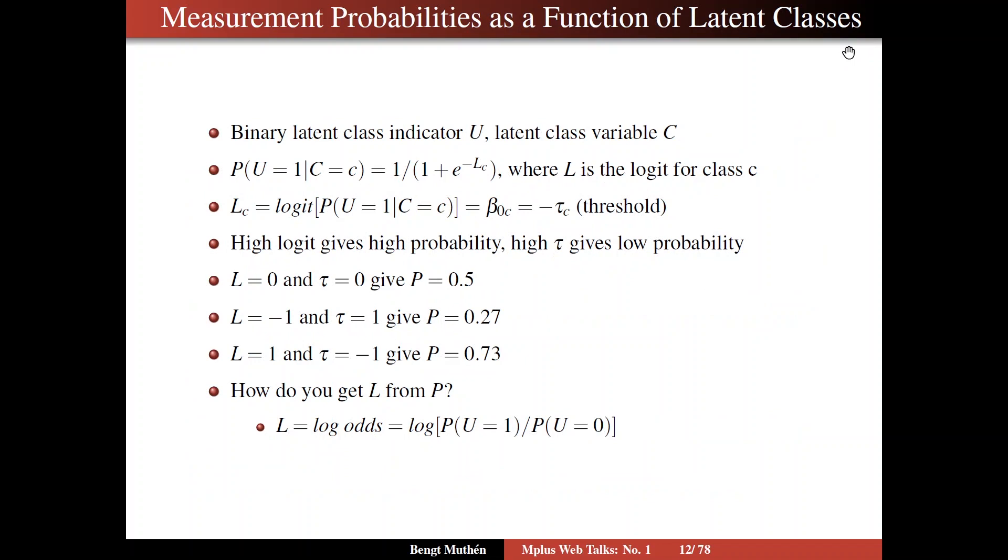Now, for the latent transition analysis situation, it's even simpler. So here, for instance, if you talk about measurement probabilities, you will have a binary latent class indicator, u, and a latent class variable, c. You can think of them as binary, both of them.